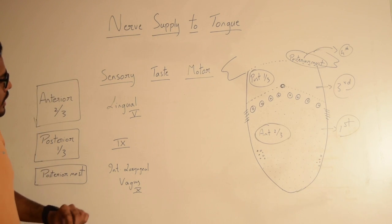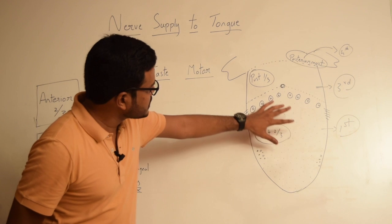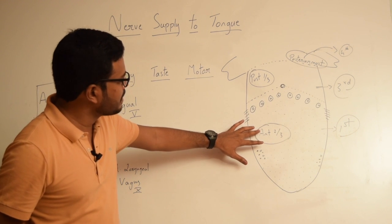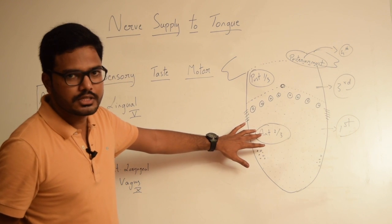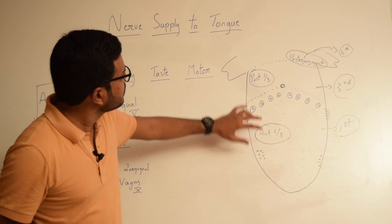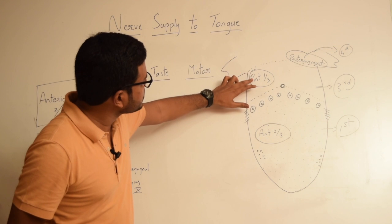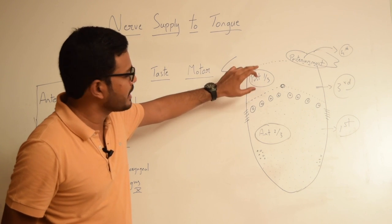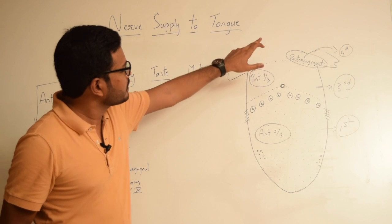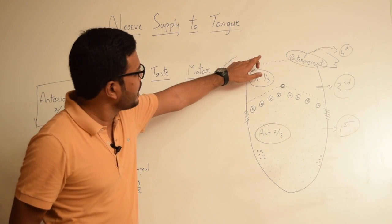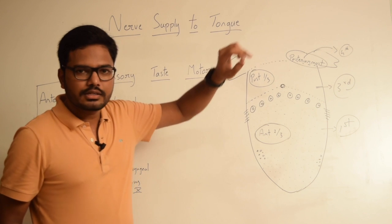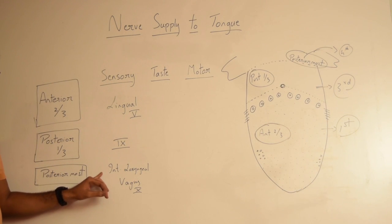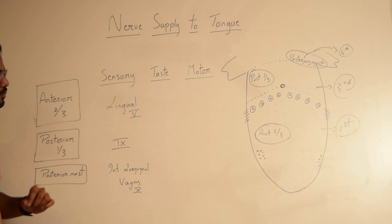In brief, the general sensation for the anterior two-thirds is by the lingual nerve, which is a branch of the trigeminal nerve. For the posterior one-third, the general sensation is by the glossopharyngeal nerve. And for the posterior most part, the general sensation is by the internal laryngeal branch of the vagus nerve.